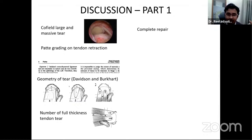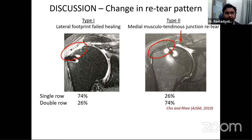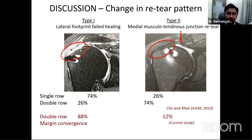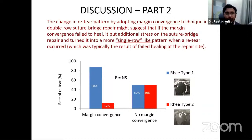Margin convergence in a double-row suture bridge pattern may change the stress distribution, leading to failed healing rather than true re-tear. Most re-tears in this setting were probably failure of healing. Functional outcome in the short term showed no significant difference between margin convergence and non-margin convergence groups. Morphology and tendon retraction remain the most significant predictors of failure.